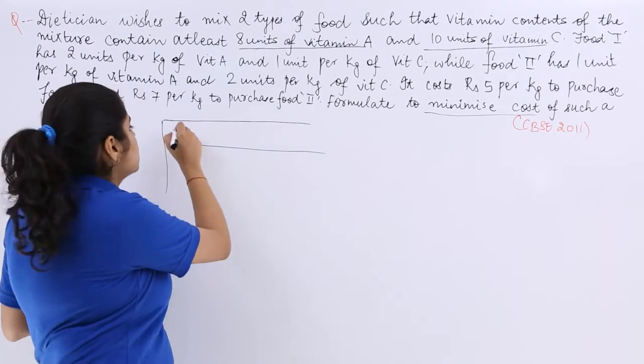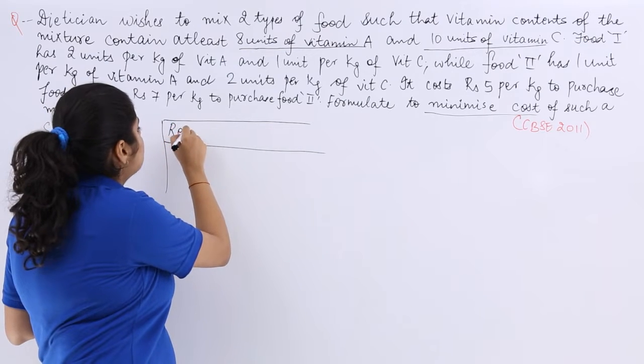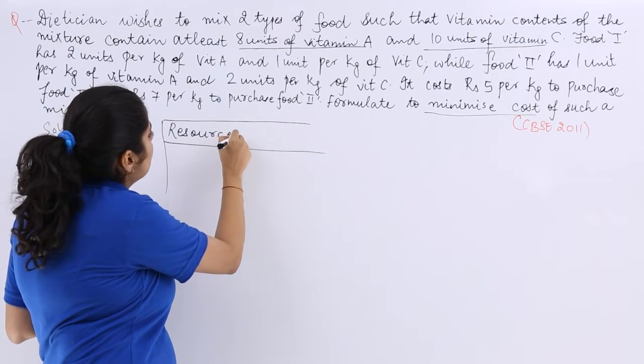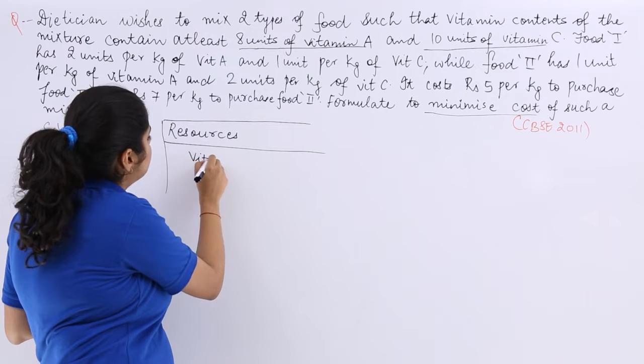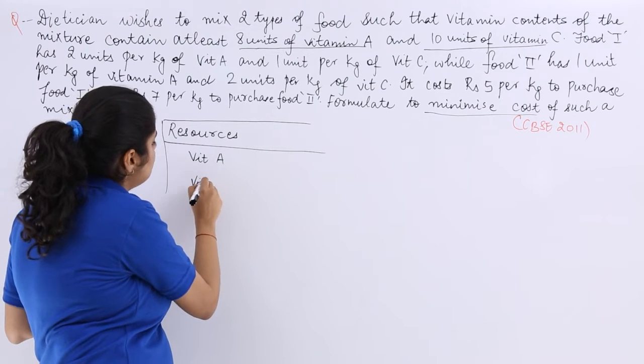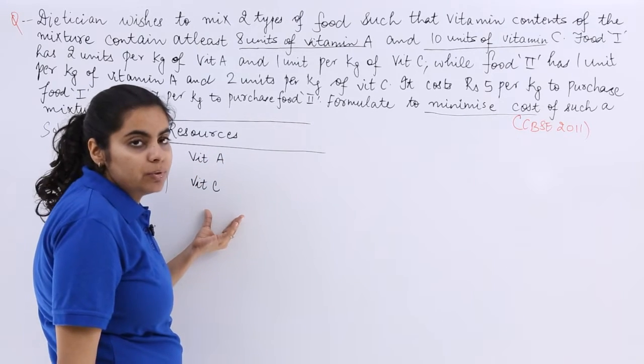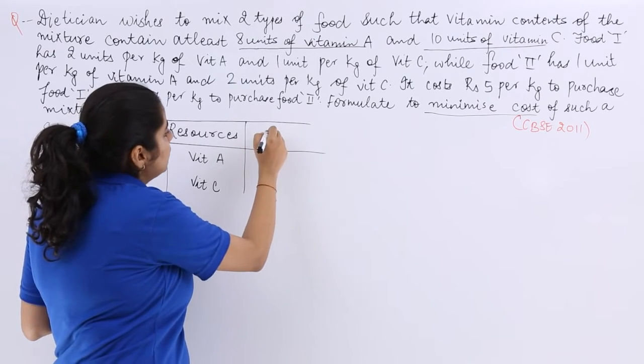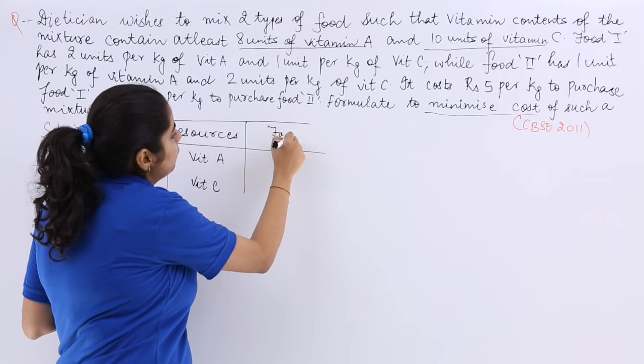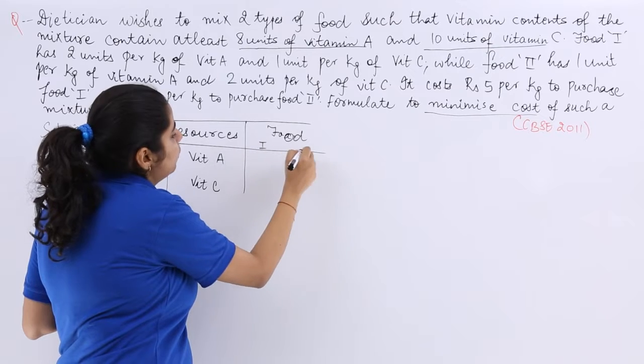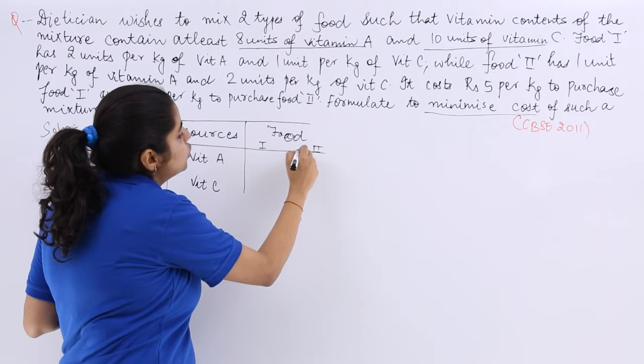The markings and all can be made by the ruler and the scale. So what are the resources? We are talking about the resources of vitamin A and vitamin C. I write in short VIT A and vitamin C. Then what kind of food are we talking about? We are talking first of food 1, then we are talking of food 2.